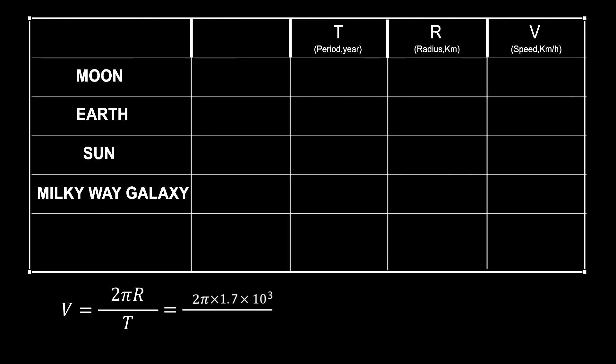The period of Moon rotation around its axis is 27 days and its radius is 1,730 kilometers. So the speed of this rotation is 16 kilometers per hour. Let's have a look at this table.